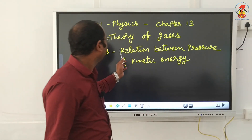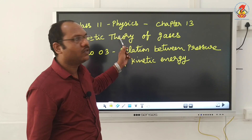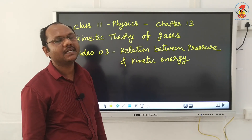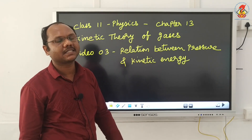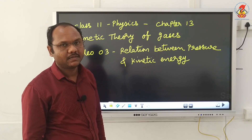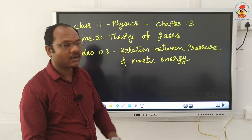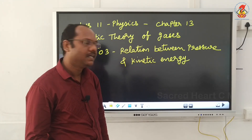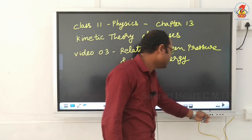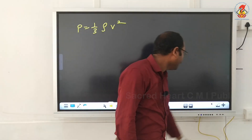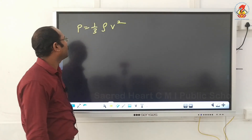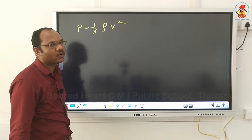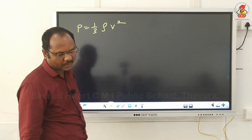Now we are going to derive the relation between pressure and kinetic energy. We already know the pressure of the gas: P = 1/3 ρv².